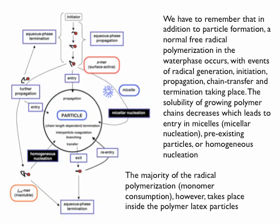We start at the top with initiator decomposition. The radical starts to grow in the water phase, and I become a z-mer — which is like becoming surface active — at around two or three units for styrene. Then I can potentially join a micelle, and I become a particle via micellar nucleation. If there is no micelle, or I can't find a monomer droplet, I can further propagate and become a z-mer that collapses on itself — that's called homogeneous nucleation.